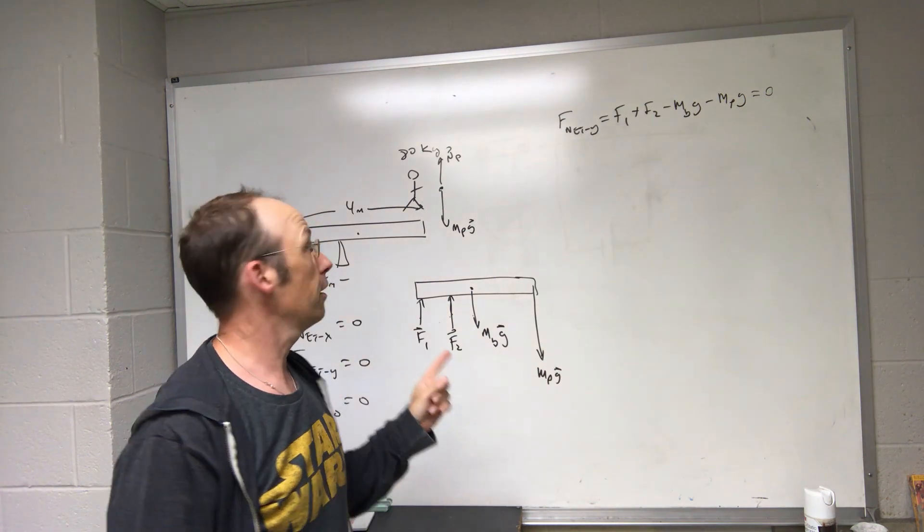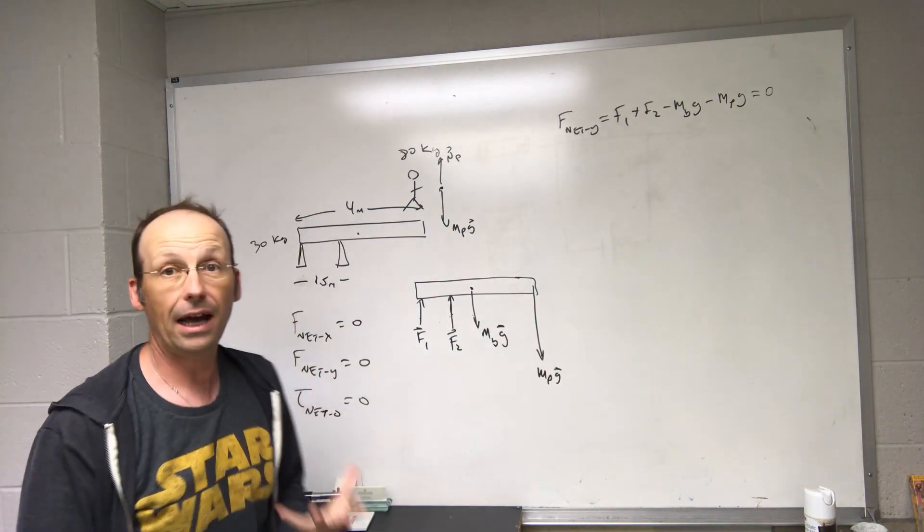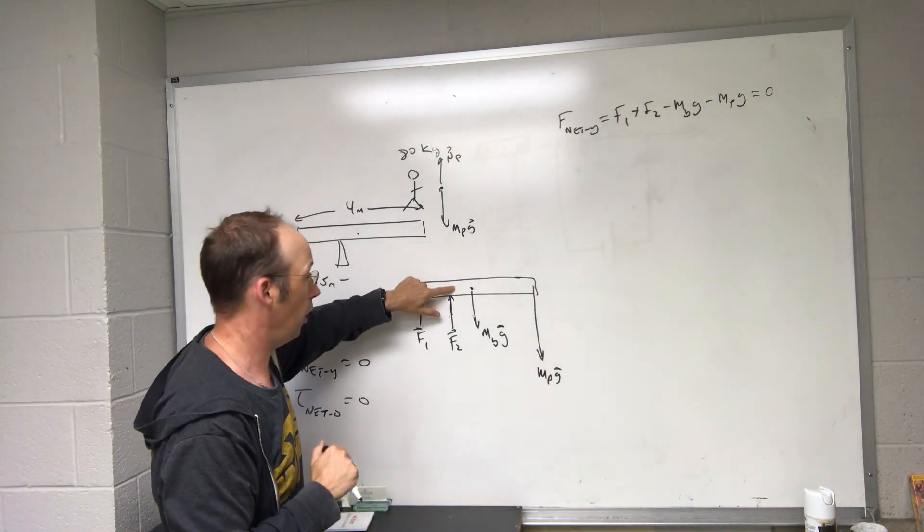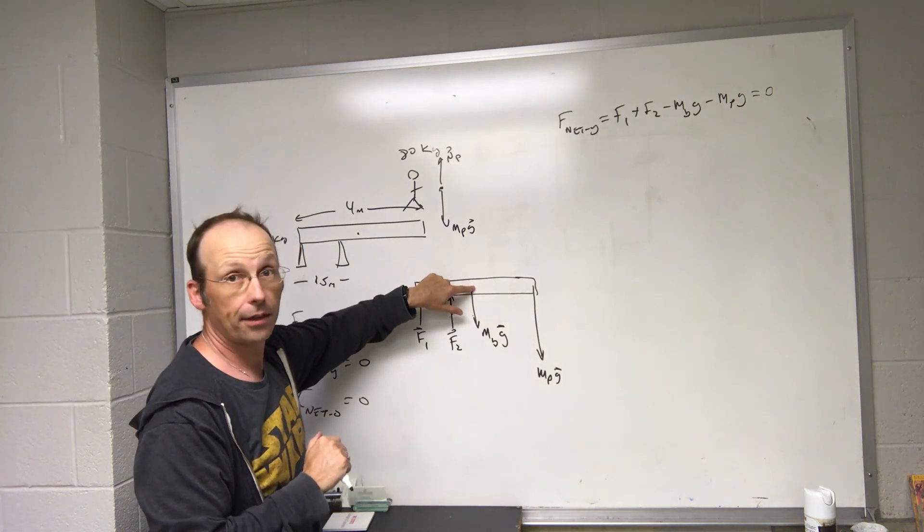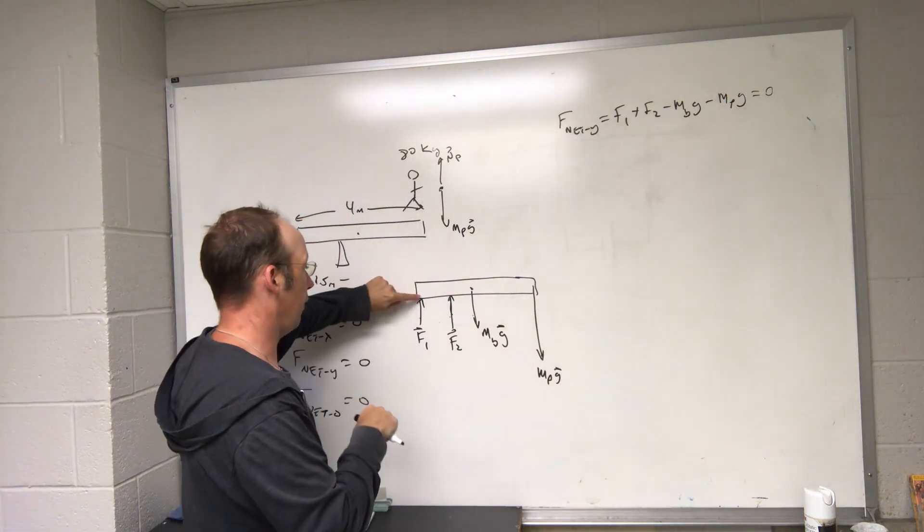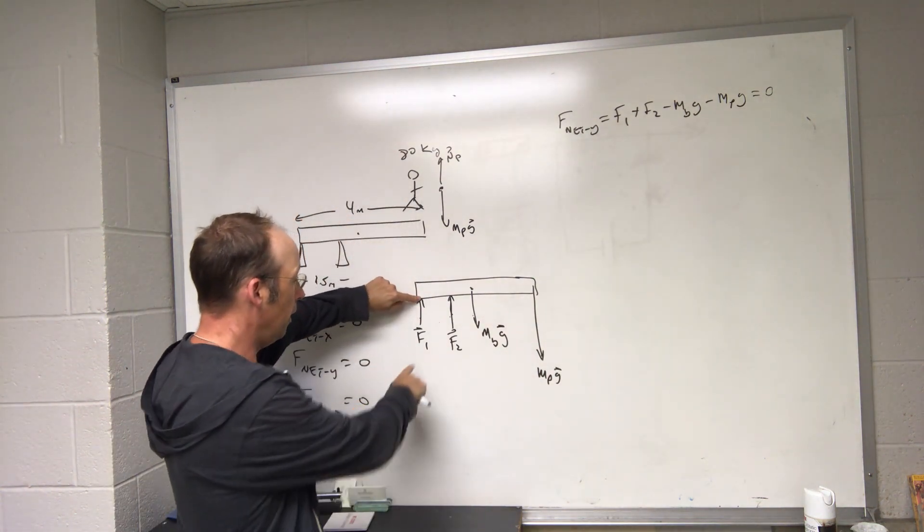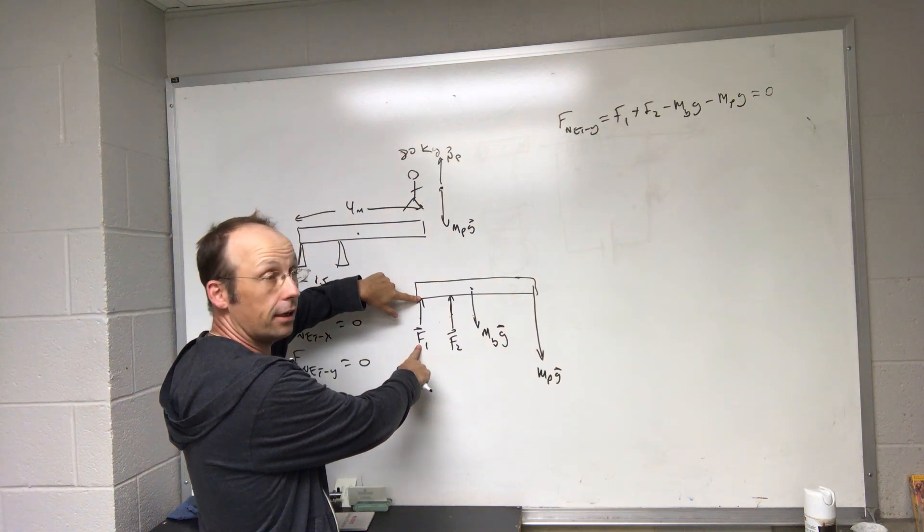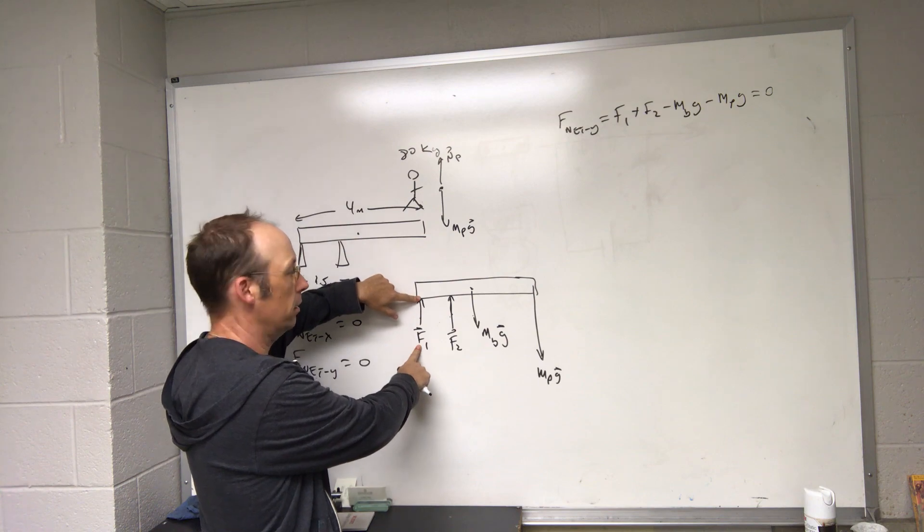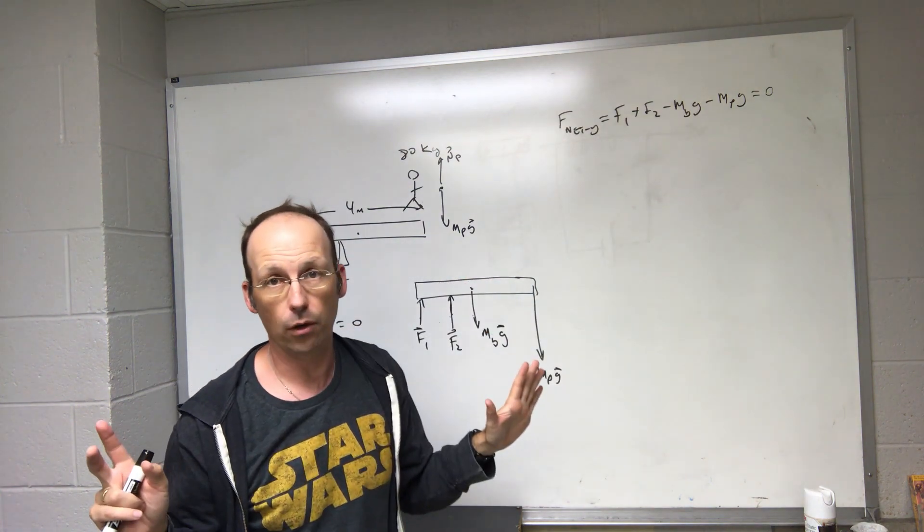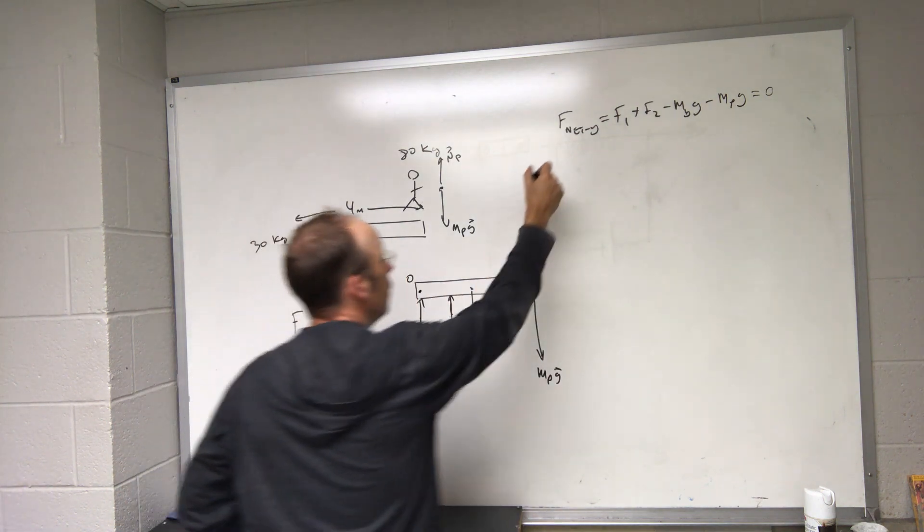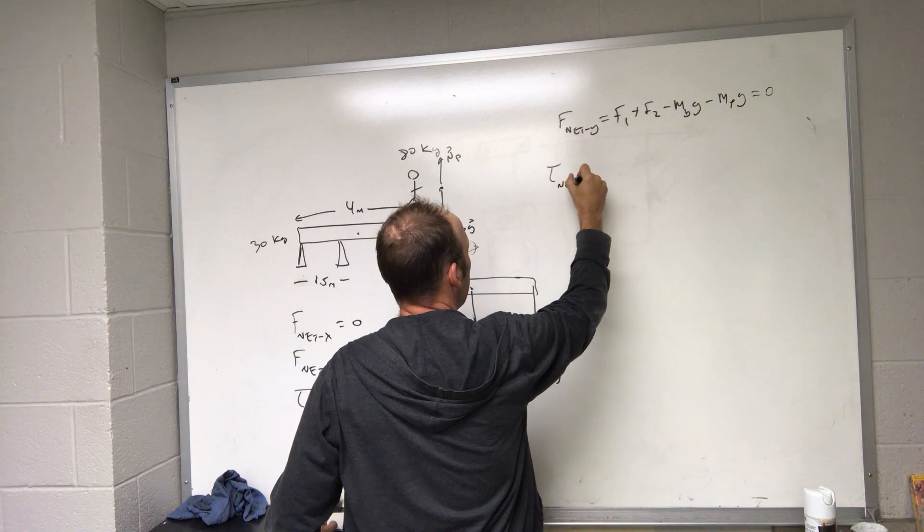So now let's do the next equation, the torque about some point is zero. Now, the board's not rotating. It's not rotating about this point. It's not rotating about that point. I can pick any point I want. If I pick a point where one of the forces are, like right here, then this force won't exert any torque about that point because r will be zero. So that would be nice to get rid of one of those forces. So you could redo this problem and pick any point you want, and you should try that. But I'm going to pick this point O.